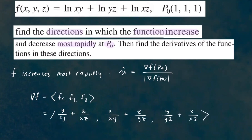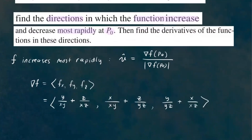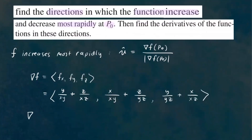Now we're going to plug in point P0. We evaluate our gradient of f at (1, 1, 1), so we're substituting x, y, and z all equal to 1. Our vector becomes (2, 2, 2). So that's our gradient vector.